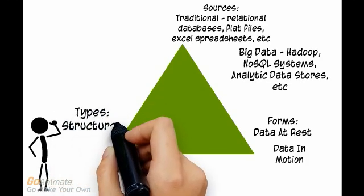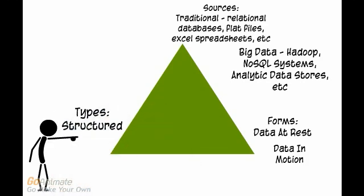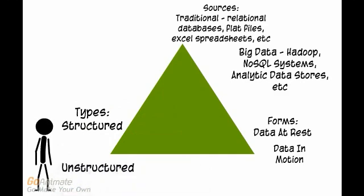On the third corner of the data triangle, we have types of data. This includes structured data, which is data stored in rows and columns, and unstructured data, which includes free form text, pictures, videos, and so on.